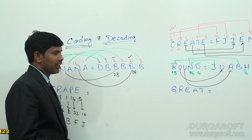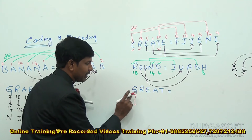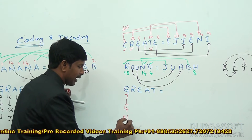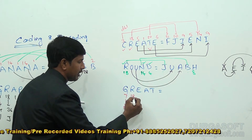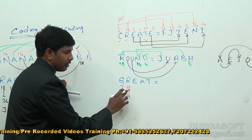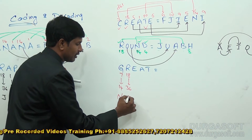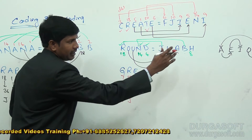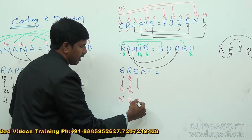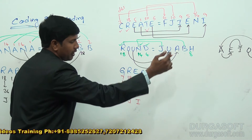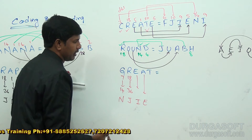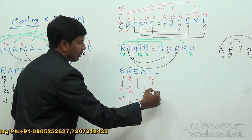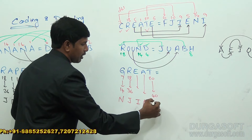According to that logic, G has value 7; double because it is a consonant, so 14, which is N. R has value 18 and it is a consonant, so double is 36, which is J. E is a vowel, so next vowel is I. A is also a vowel, so next is E. T is a consonant, so 20 doubled is 40, which is N.